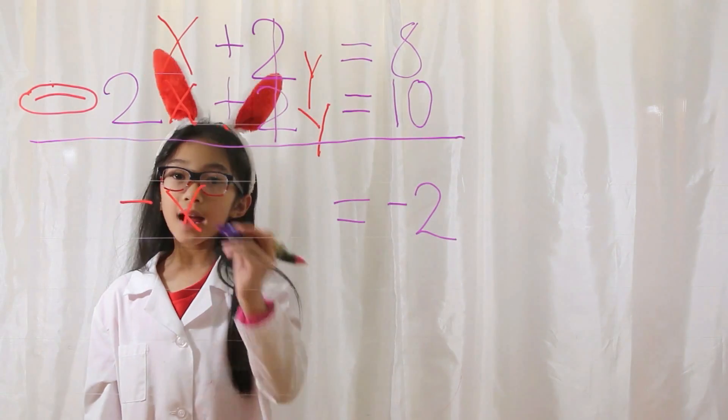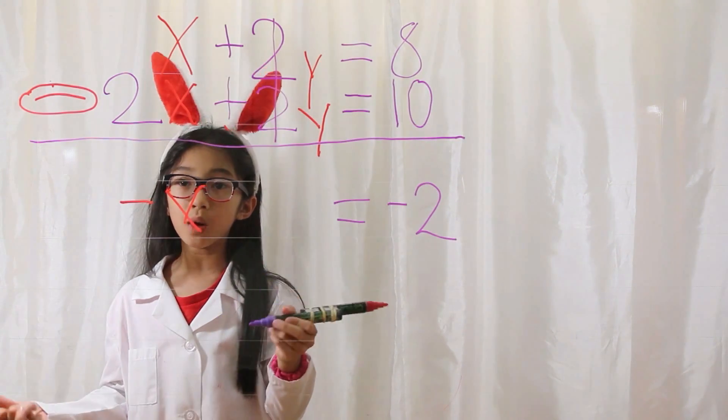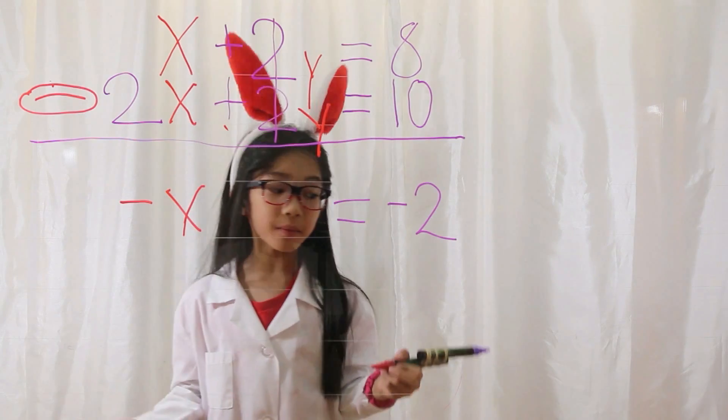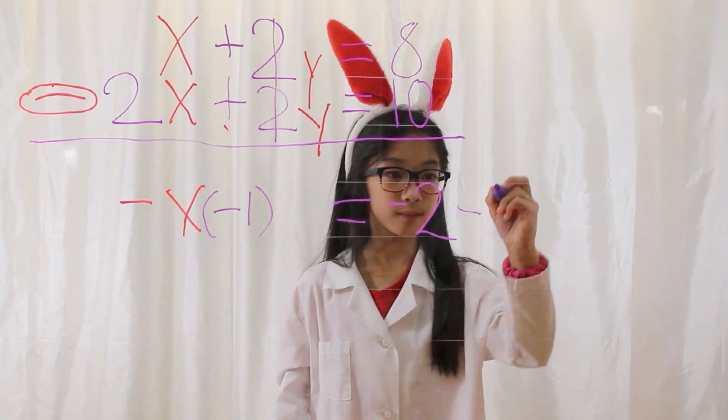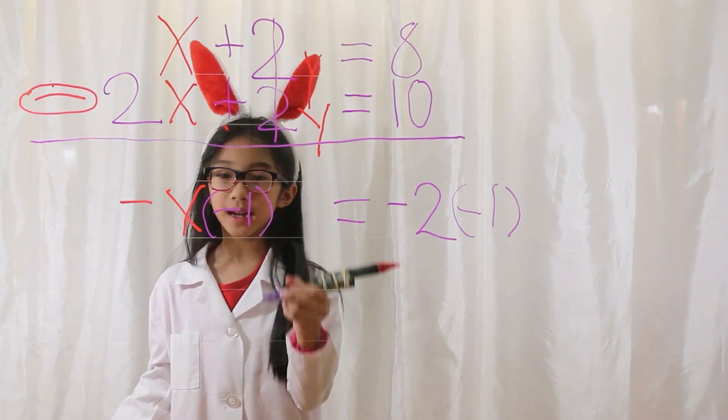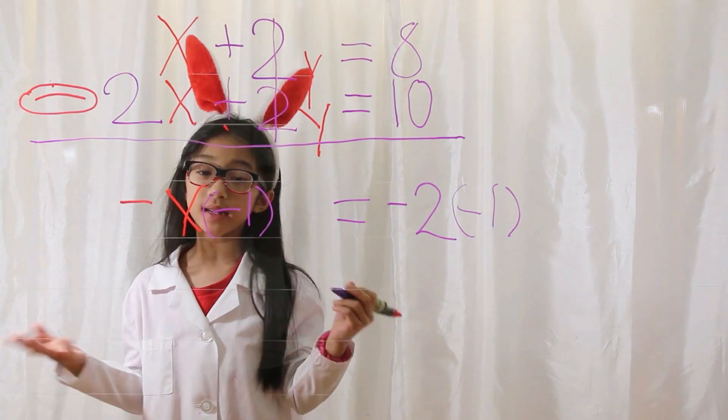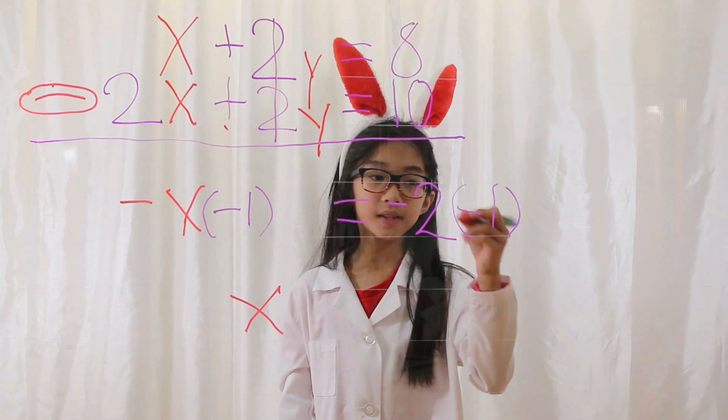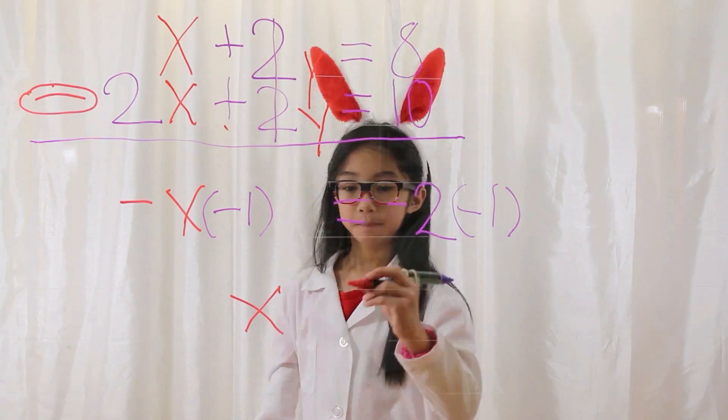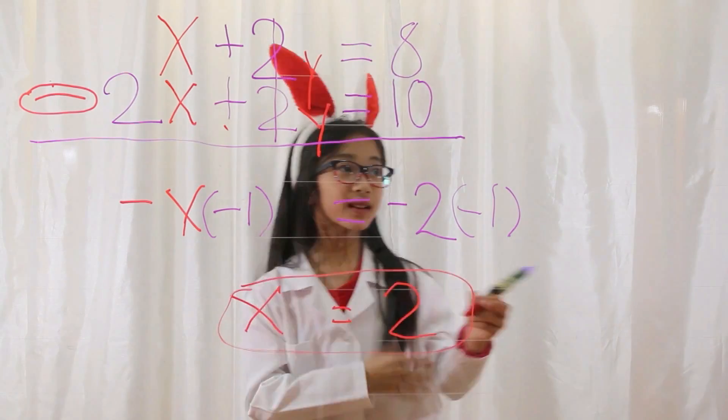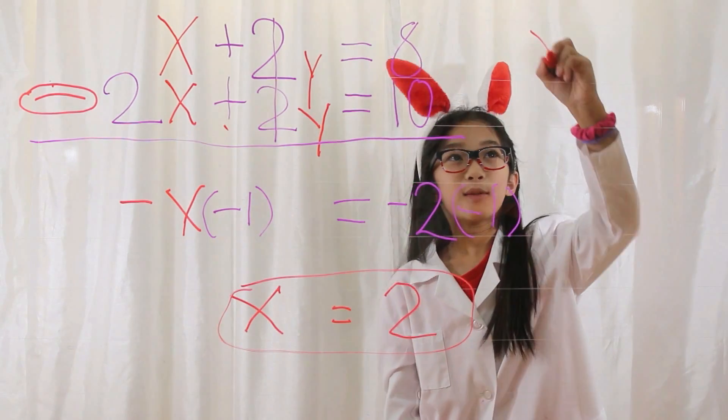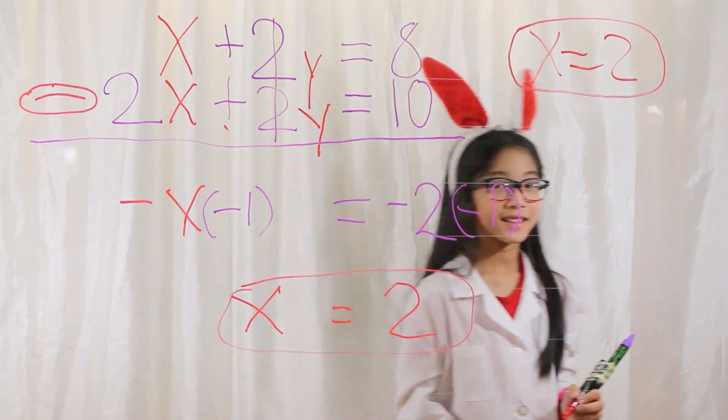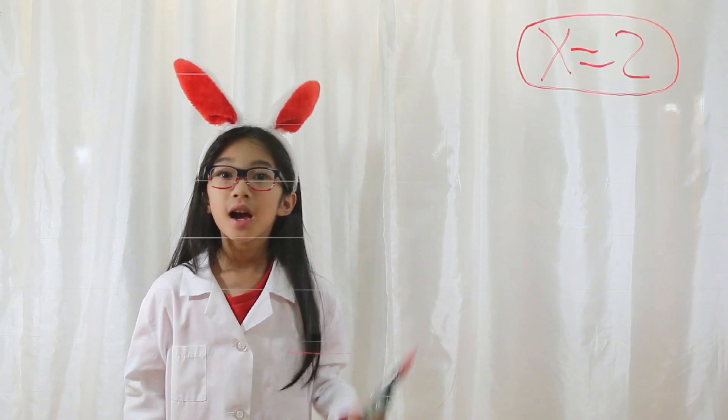Since negative x represents negative 1, you need to multiply by negative 1 on both sides. Negative x times negative 1 equals positive x. Negative 2 times negative 1 equals positive 2, so x equals 2. I will rewrite it up here so it'll always be here.